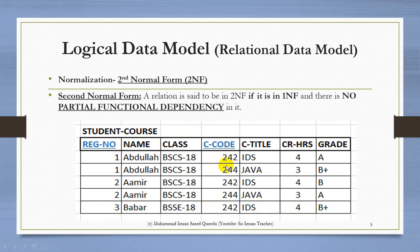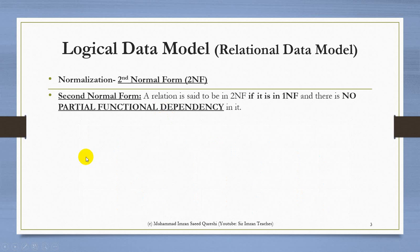Although this table is in First Normal Form with a composite key, it has all the anomalies. So we will move towards the Second Normal Form — we will find the reason for the anomalies and remove them. The Second Normal Form states: a relation is in 2NF if it is in 1NF and there is no partial functional dependency in it.